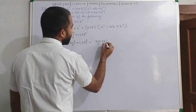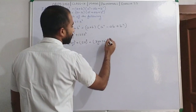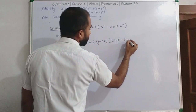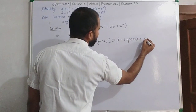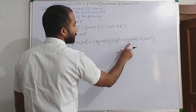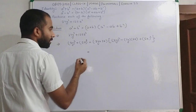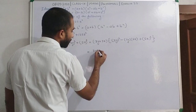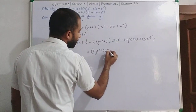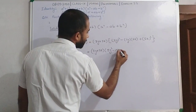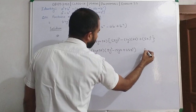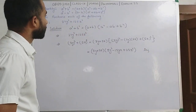...वहां पर हम 3y को रखेंगे, जहां पर b है वहां 5z को रखेंगे. So now: 3y plus 5z, और दूसरे bracket में 3y का whole square minus 3y·5z plus 5z का whole square. इसको एक step और simplify करते हैं: 3y plus 5z, then 9y square minus 15yz plus 25z square. यही हमारा required result है. Second portion आप करने की कोशिश कीजिए.